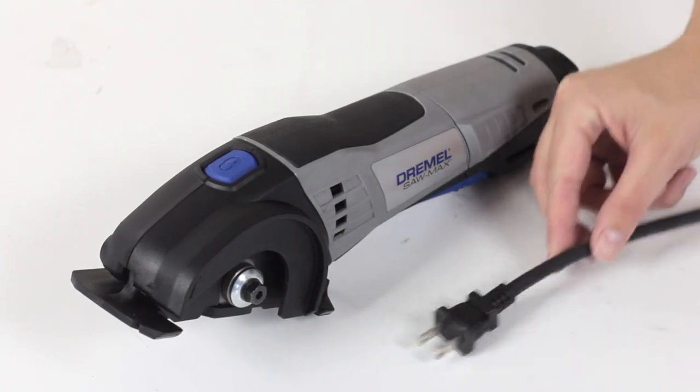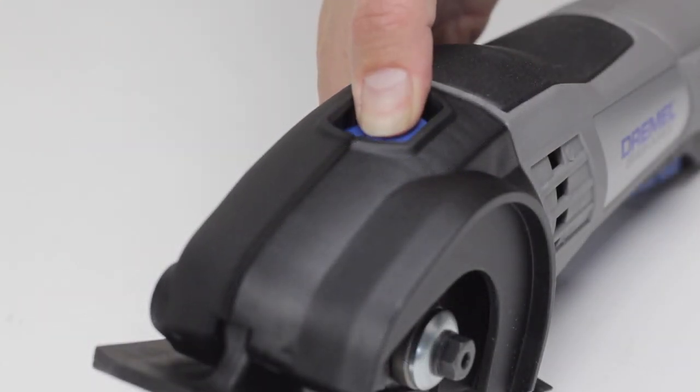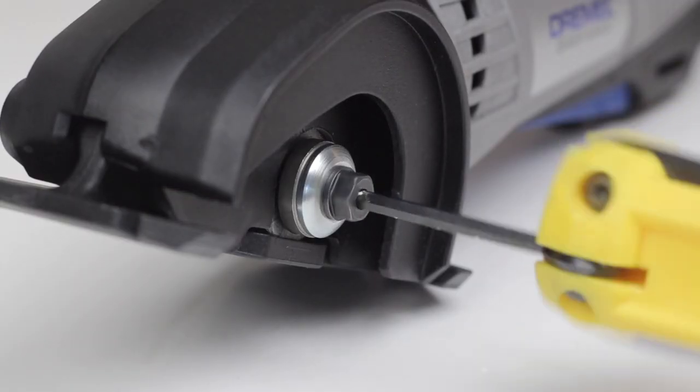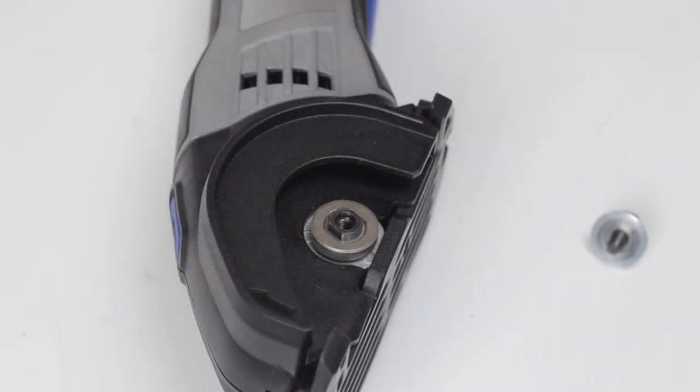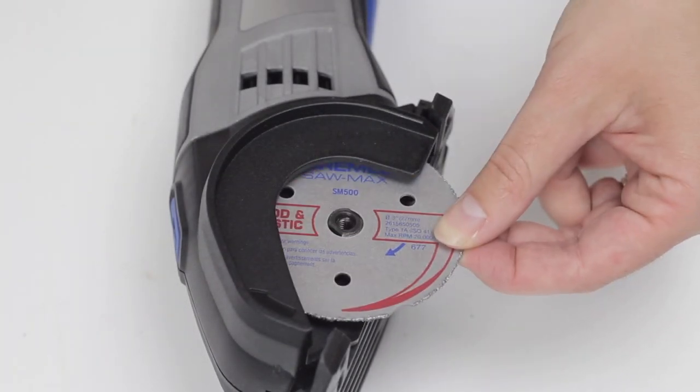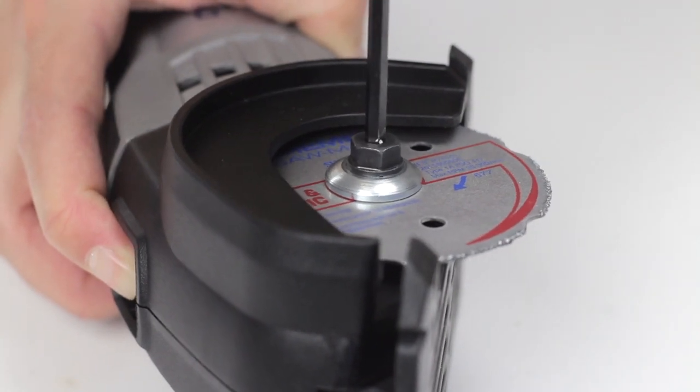To set up the saw first make sure it's unplugged. Press the spindle lock on the top of the tool. Loosen and remove the lock bolt and outer washer. Now place the cutting wheel against the inner washer on the spindle. Place the outer washer onto the cutting wheel and then tighten the locking bolt.